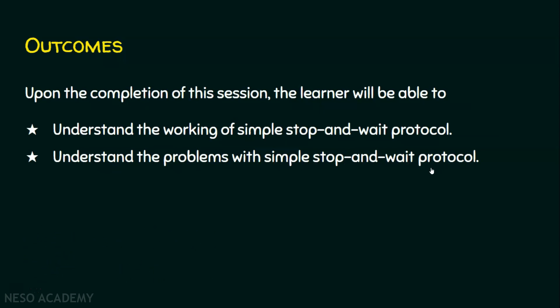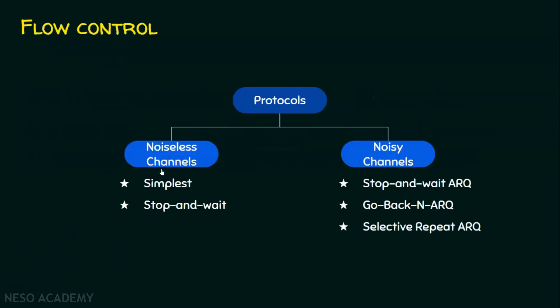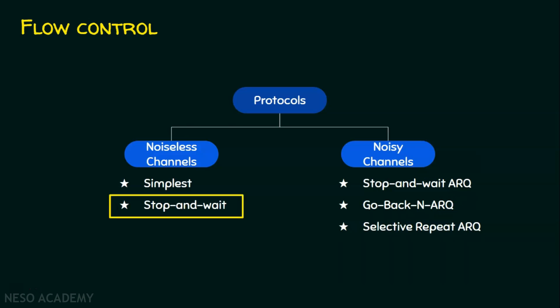We will start with the various protocols of the flow control mechanism. There are protocols for flow control pertaining to noiseless channels and noisy channels. The simplest protocol and stop and wait protocol are the flow control protocols in noiseless channels, and stop and wait ARQ, go back ARQ, and selective repeat ARQ are for the noisy channels. In today's lecture, we will be focusing on the stop and wait protocol.